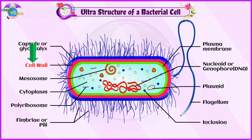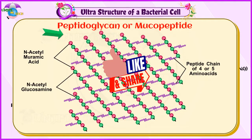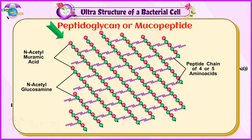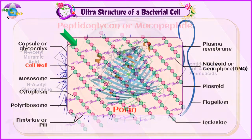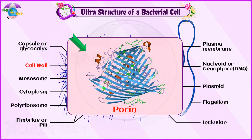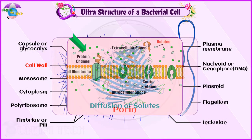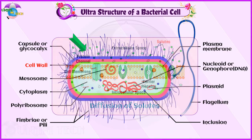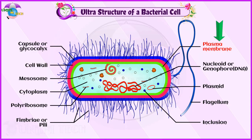The bacterial cell wall is granular and rigid. It provides protection and gives shape to the cell. The chemical composition of the cell wall is rather complex and is made up of peptidoglycan or mucopeptide. One of the most abundant polypeptides called porin is present and it helps in the diffusion of solutes.